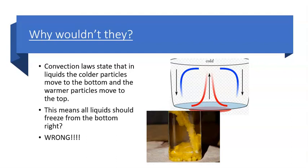It's because they actually don't follow normal convection laws of liquids. The normal convection laws are that colder particles in a liquid will move to the bottom of the container and your warmer and hotter particles will move to the top of the container. So if that is the case and all your cold liquids are moving to the bottom of the container, wouldn't it make sense that it would freeze from the bottom?